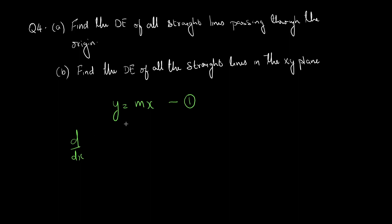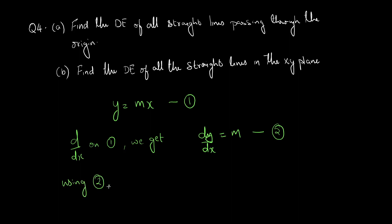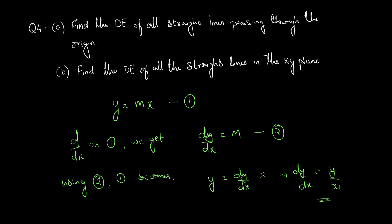Differentiating with respect to x on equation 1, we get dy by dx equal to m. Let this be equation 2. To eliminate m, we substitute the value of m from equation 2 into equation 1. Using equation 2, equation 1 becomes: y equal to (dy/dx) into x, which gives dy by dx equal to y by x.